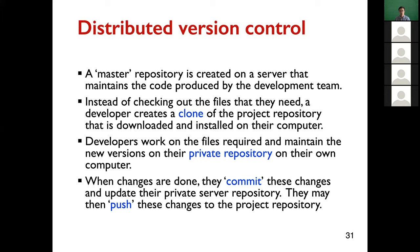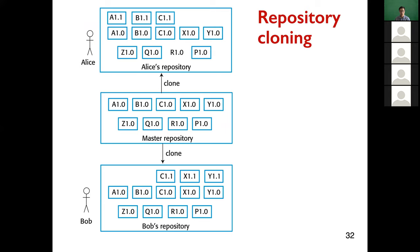There are multiple repositories in distributed version control. For example, there is a master repository with different components and versions; developers Alice and Bob clone this repository to have their own individual repositories, each being a complete copy of the master repository.